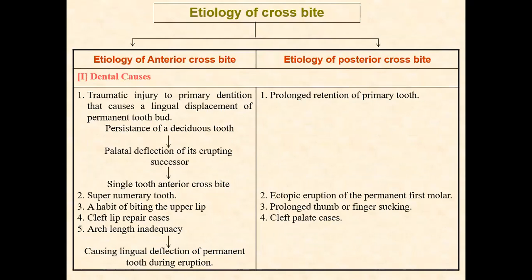Coming to the etiology of posterior cross bite — the dental causes: prolonged retention of a primary tooth leads to deflection of the posterior permanent tooth, which will erupt lingually or palatally. Other causes include ectopic eruption of the permanent tooth, prolonged thumb sucking habit — which causes constriction of the maxillary arch leading to posterior cross bite — and cleft lip and palate cases.